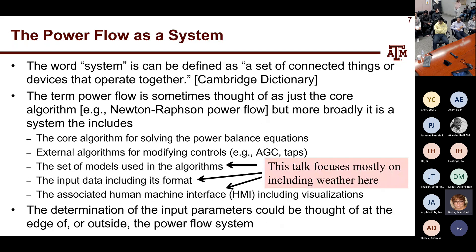The word 'power flow' can be used in different ways. In its most specific sense, it's just the core algorithm — like Newton-Raphson power flow taught in an undergrad class. More broadly, it includes external algorithms for automatic generation control, tap control, and similar functions. Even broader, it includes the models that go into it, the input data, and the human-machine interface including visualizations. This talk mostly focuses on bringing additional models and data in, not modifying the core algorithm.